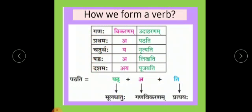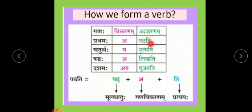How will we identify these Ganaha? They have their identification sign called Vikaranam. If the identification sign is A — for example, if we take Pathati — we take the main root Patha, plus the Gana Vikaranam A, plus the ending Ti. So Patha + A + Ti = Pathati. It is very easy to recognize the Gana Vikaranam: look at the Swara (vowel) before the ending Ti — it is A, so A is the Vikaranam.